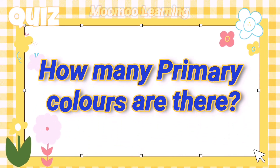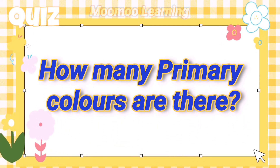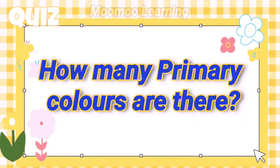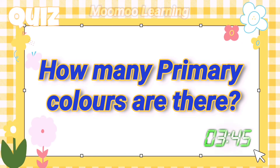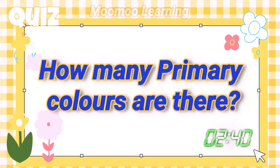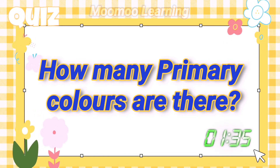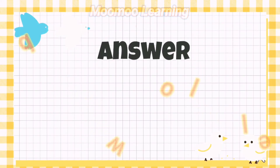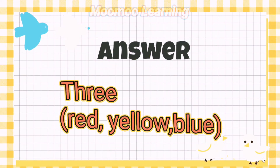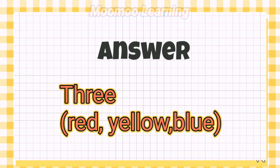How many primary colors are there? Answer: 3 — Red, Yellow, and Blue.